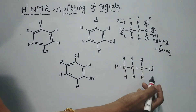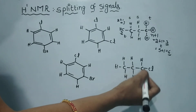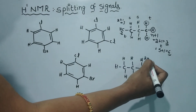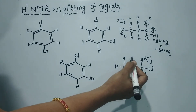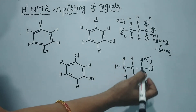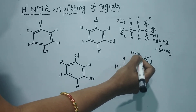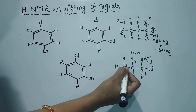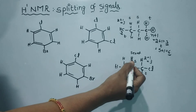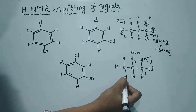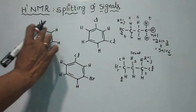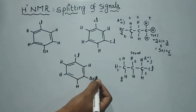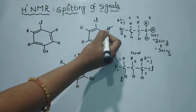Here we have 2 hydrogens on this carbon and 2 hydrogens on the adjacent, so 2 plus 1 equals 3 — triplet. For the middle 2 hydrogens with 3 on one side and 2 on the other: total 5, so 5 plus 1 equals 6 — a sextet. The next carbon with 2 adjacent hydrogens gives a triplet.